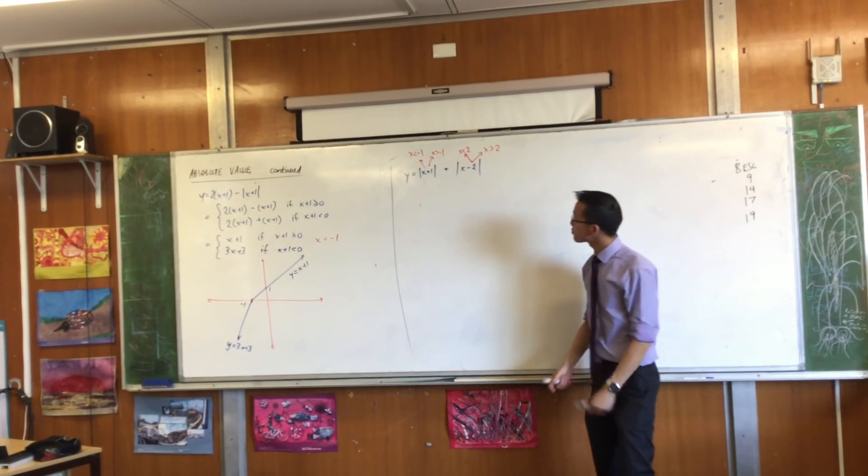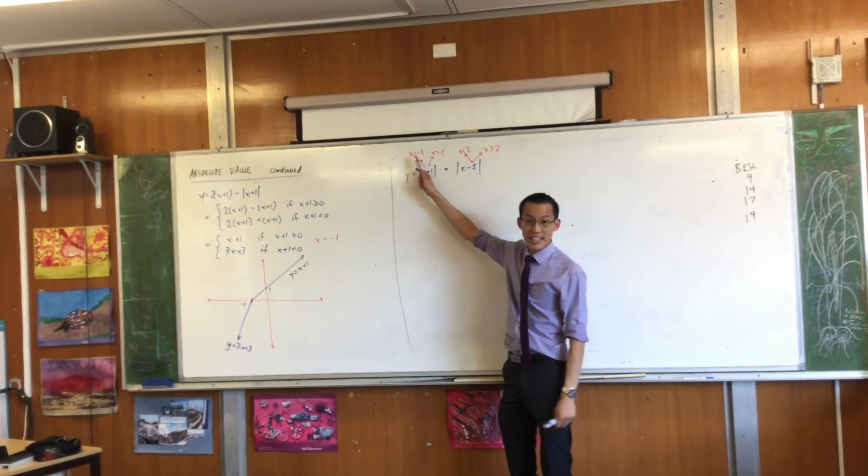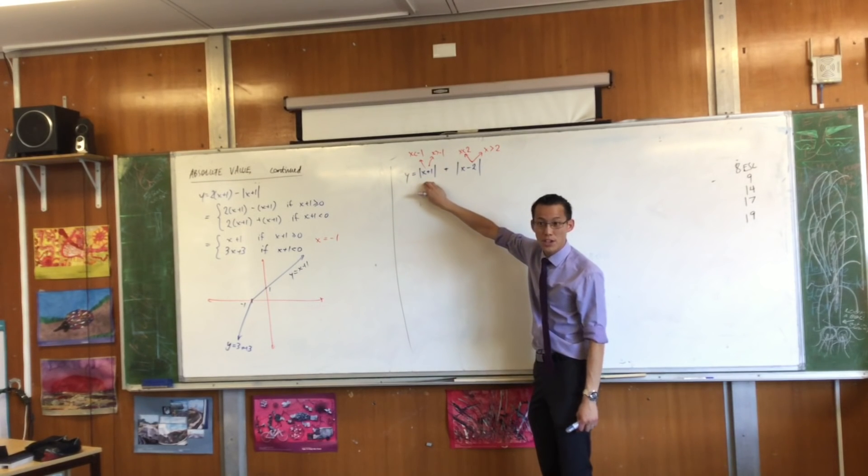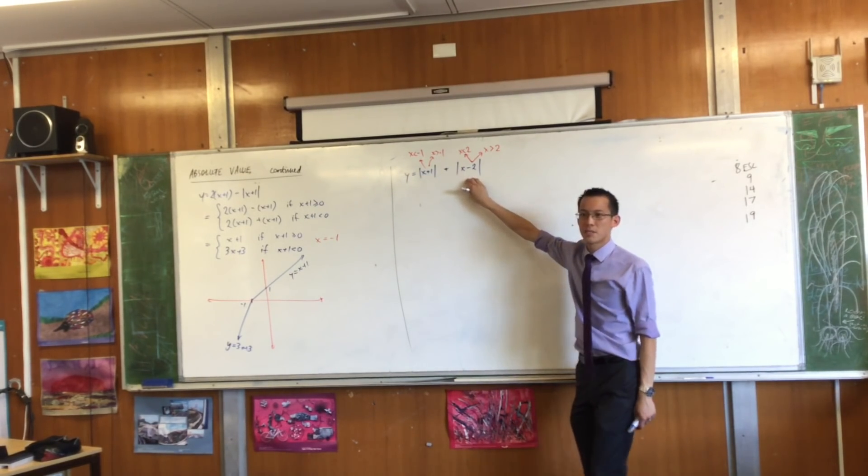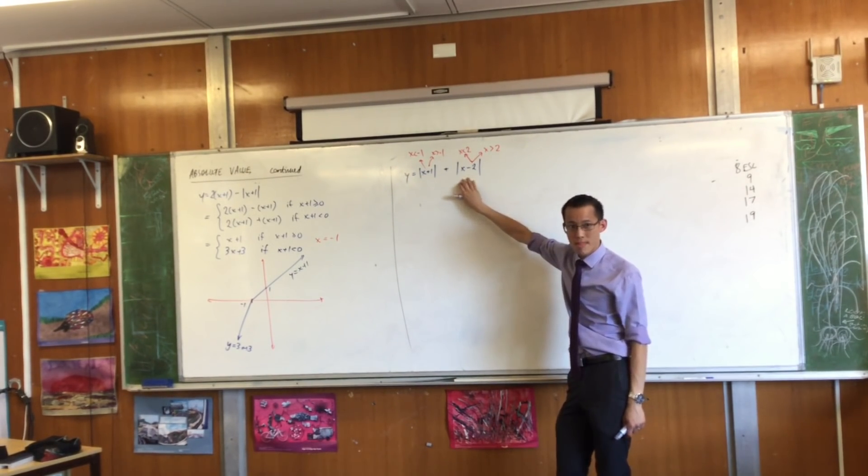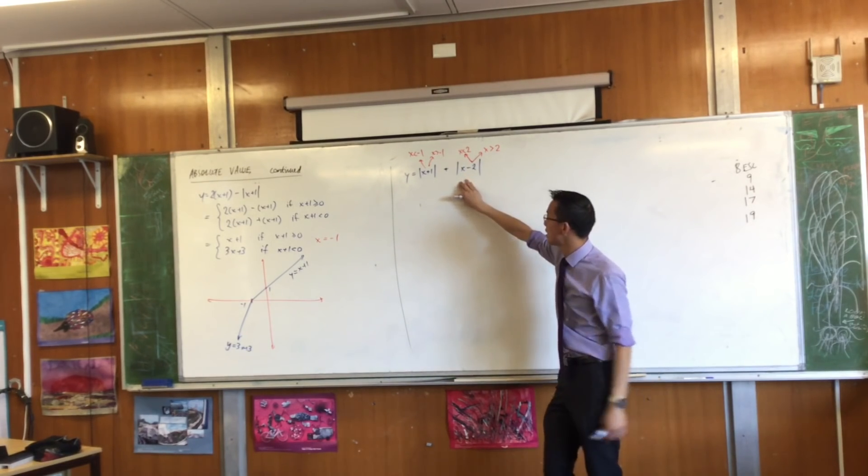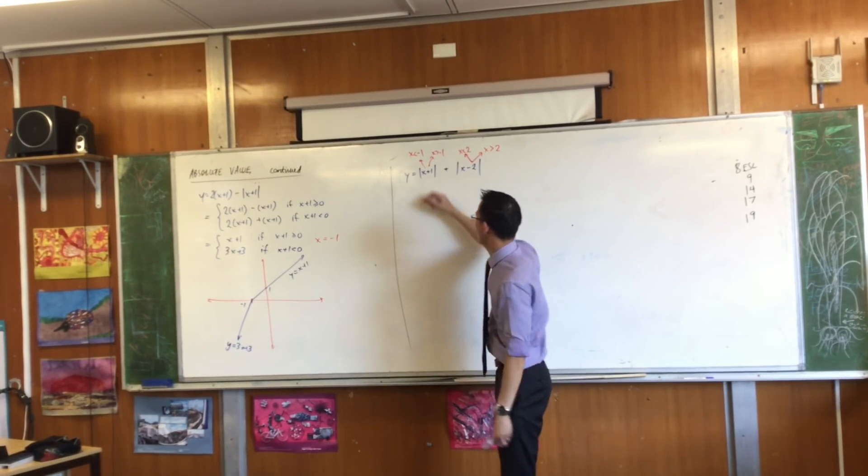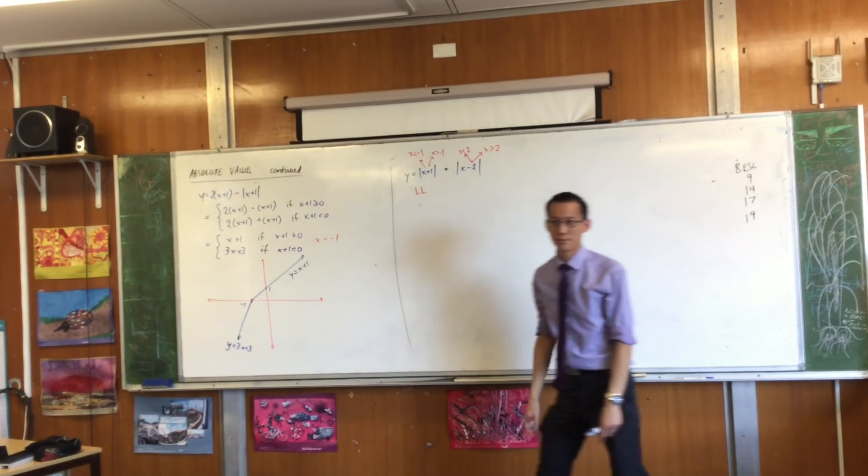So think about this, right? If x is less than negative one, I'm going to have the left version of this. Which version of this am I going to have? I'm going to have the left version, right? The left version and the left version. I'm just going to write left, left.